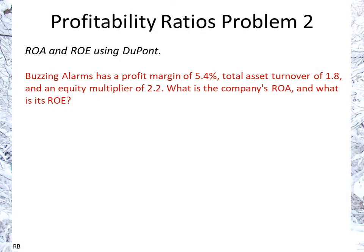Profitability Ratios Problem 2: Calculating ROA and ROE using the DuPont Identity. Buzzing Alarms has a profit margin of 5.4%, a total asset turnover of 1.8, and an equity multiplier of 2.2. What is the company's return on assets, and what is its return on equity?